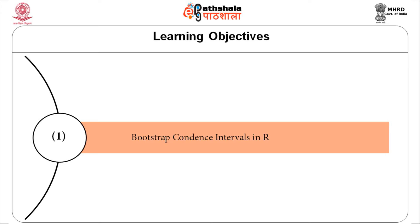The reference here would be the third chapter of Bootstrap Methods with Application to R by Michael R. Charnik and Robert A. Labune. We would be using their data and codes, and reproduce those codes line by line to see what is done for calculating all these different types of confidence intervals.